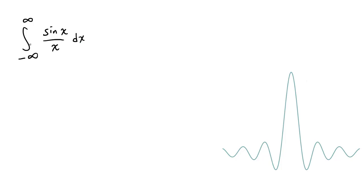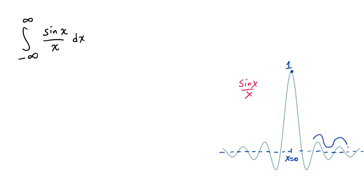In this video, we are going to try to evaluate the integral from negative infinity to infinity of sine x over x dx, which is graphed right here. You can imagine the x-axis going through something like this. Near x equals 0, we know sine x over x is going to approach 1 from our calculus class. We see that sine is oscillating up and down as you approach infinity, but the oscillation is decreasing in magnitude thanks to dividing by x. So how do we actually evaluate this?